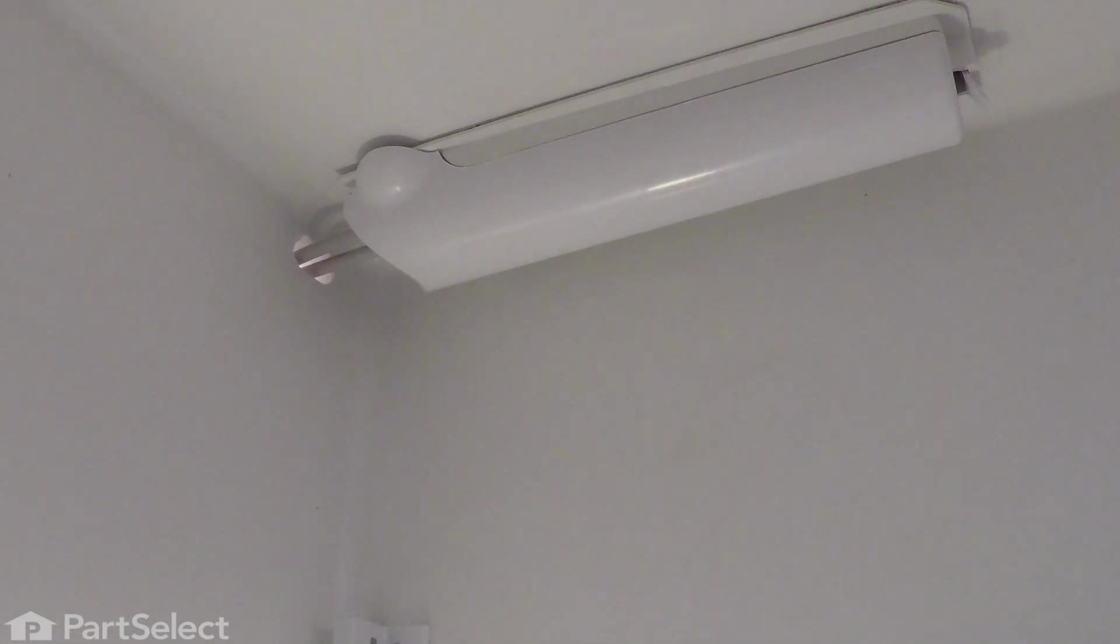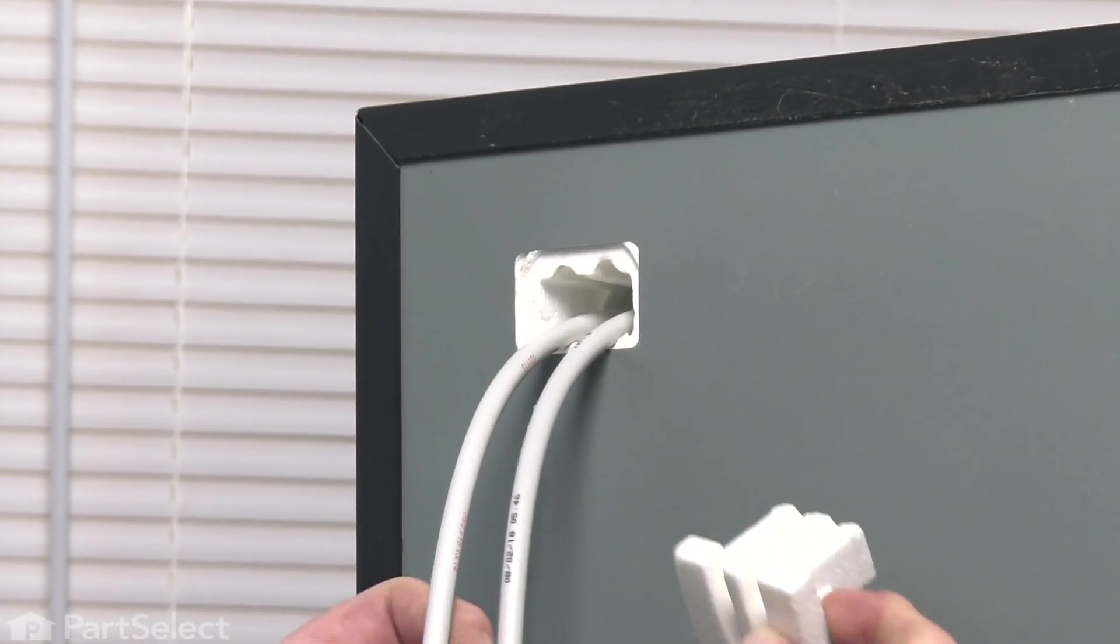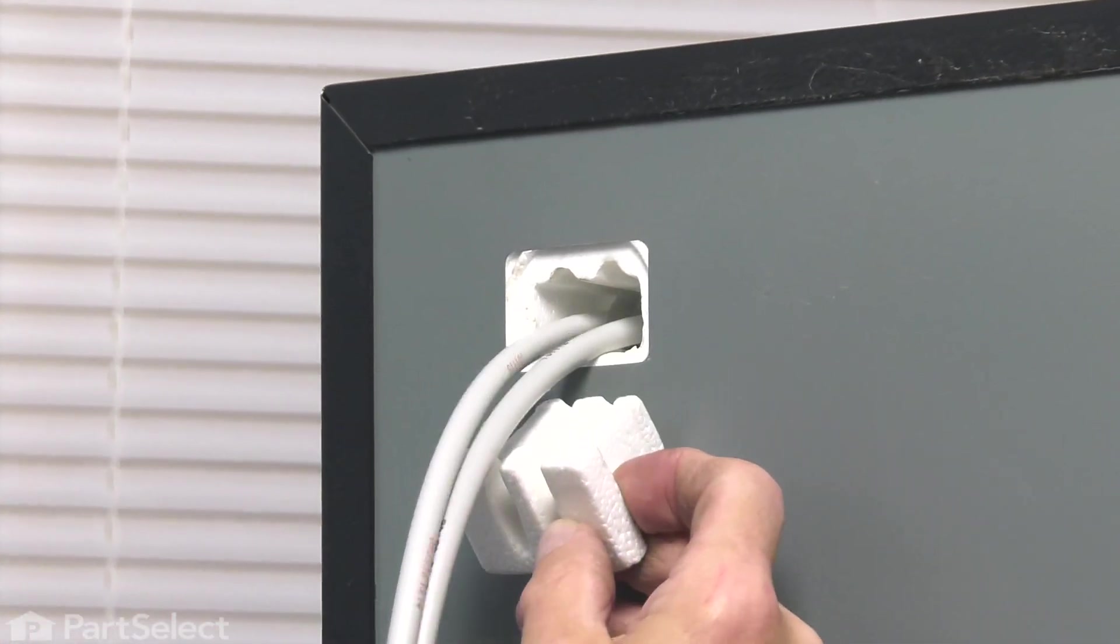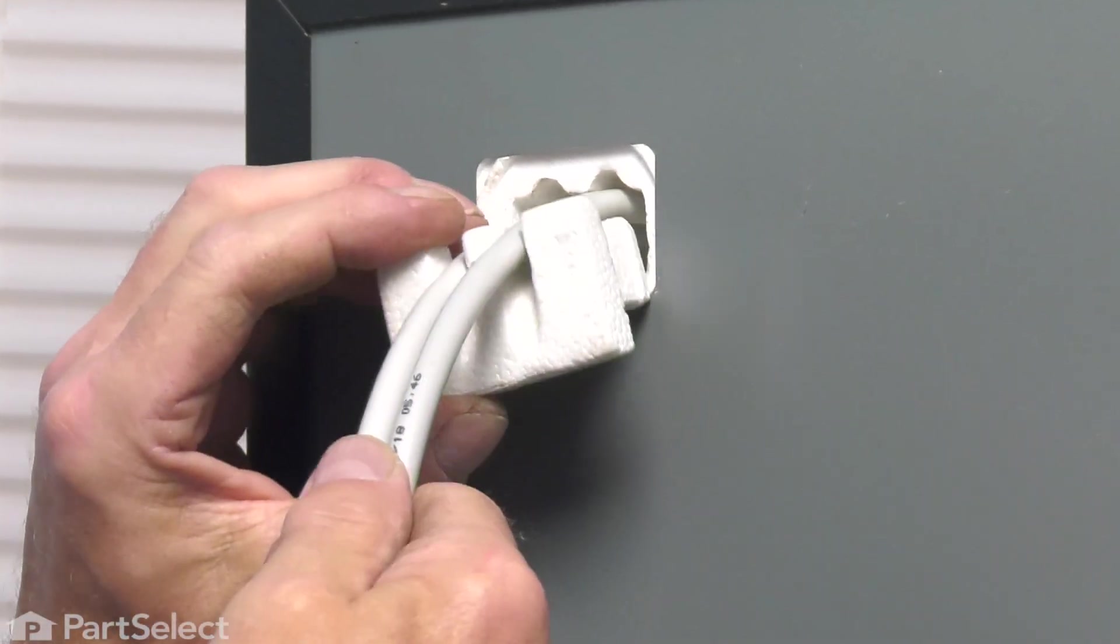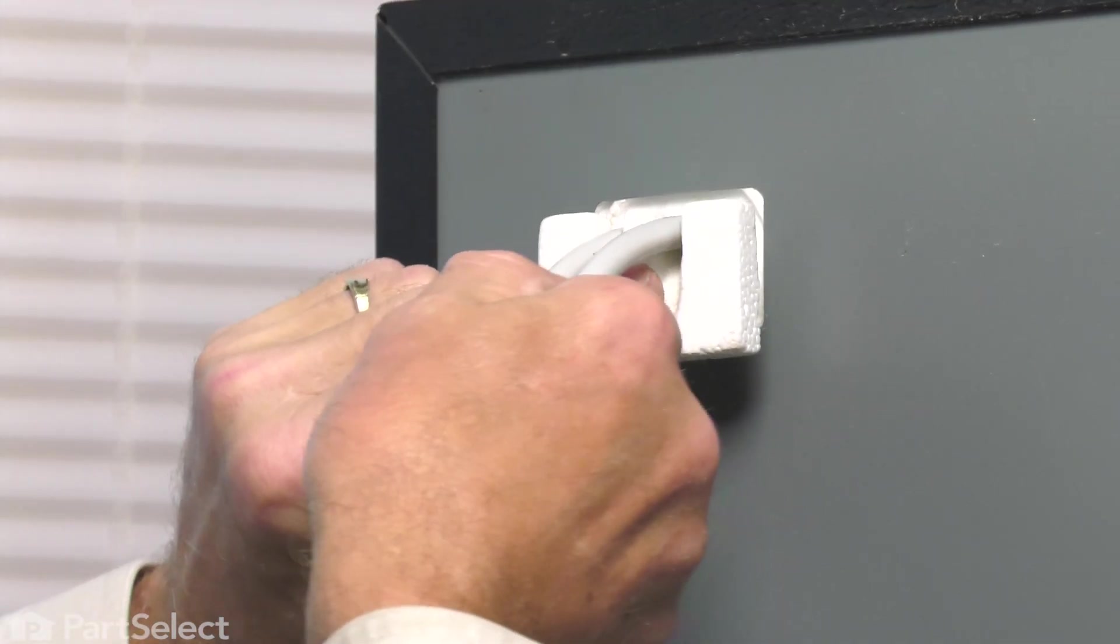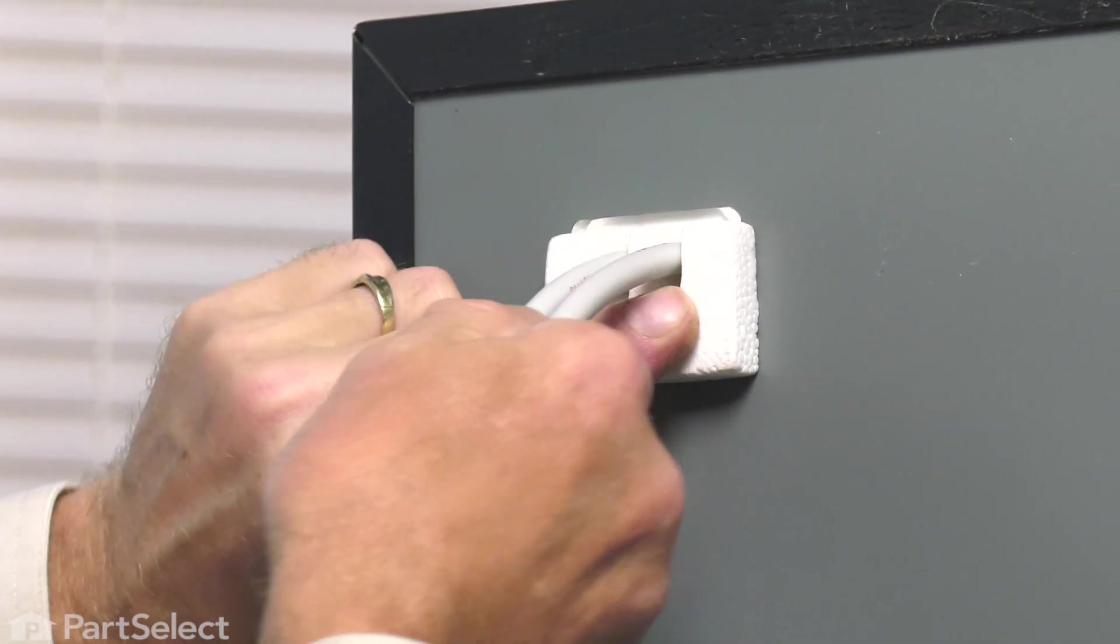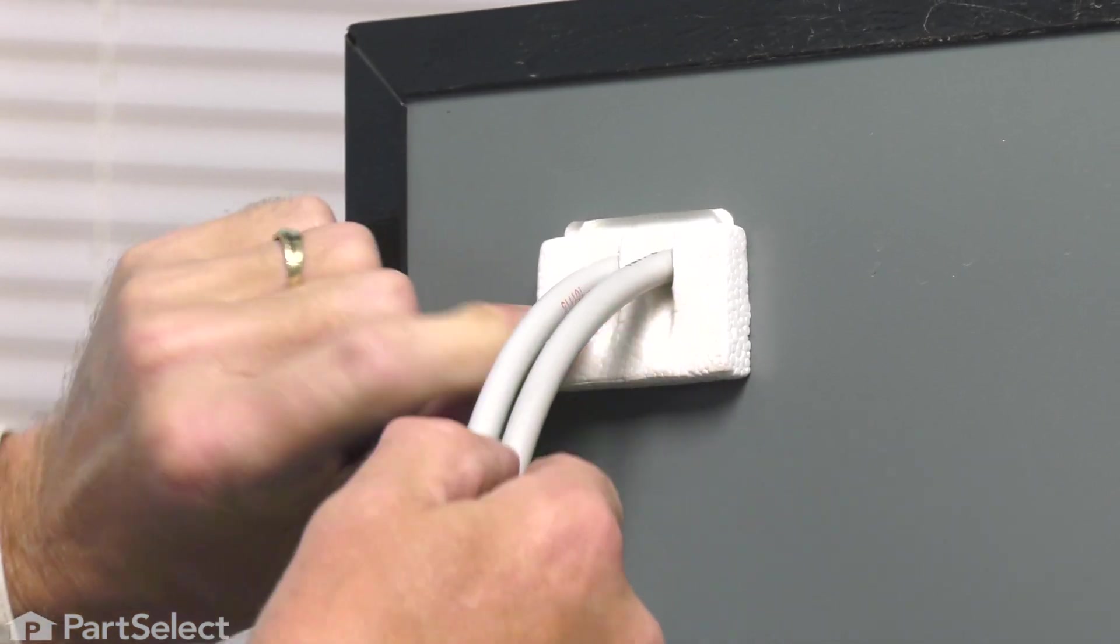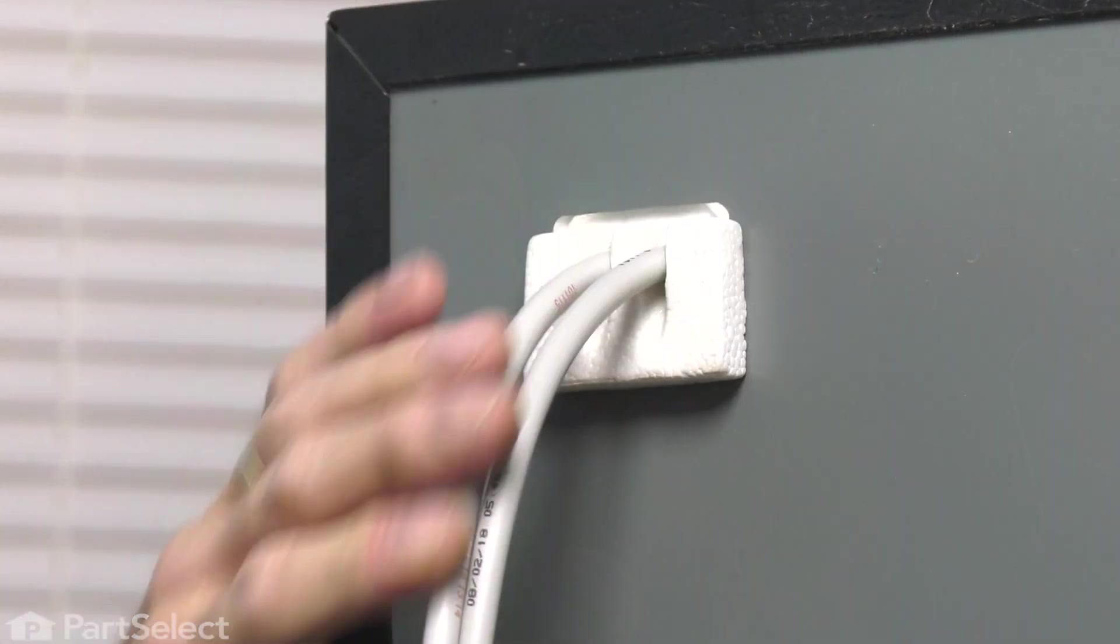Now, we'll go to the back of the refrigerator and replace that styrofoam block. We'll carefully take that styrofoam block. Just lift up on those water lines. Take any strain off them. Press that block firmly into place. Make sure it seals up that opening.